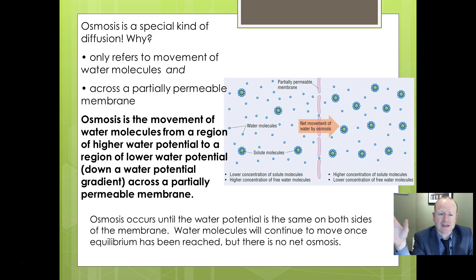You often need to add in the idea of a partially permeable membrane into the definition. Where it gets confusing is when we start talking about water concentration versus solute concentration. So often it's better to talk about what we call water potential. The definition you'll be expected to recall now is: osmosis is movement of water molecules from a region of higher water potential to a region of lower water potential.